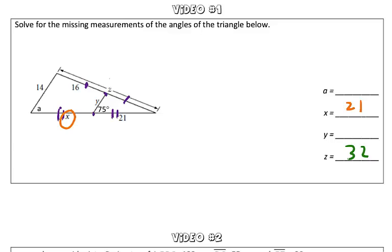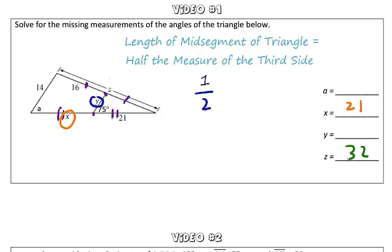Now we can take a look at Y. Y represents the midsegment of this triangle. So we know the property of a midsegment of a triangle is the midsegment is one-half the length of the third side, or the side that it's parallel to.